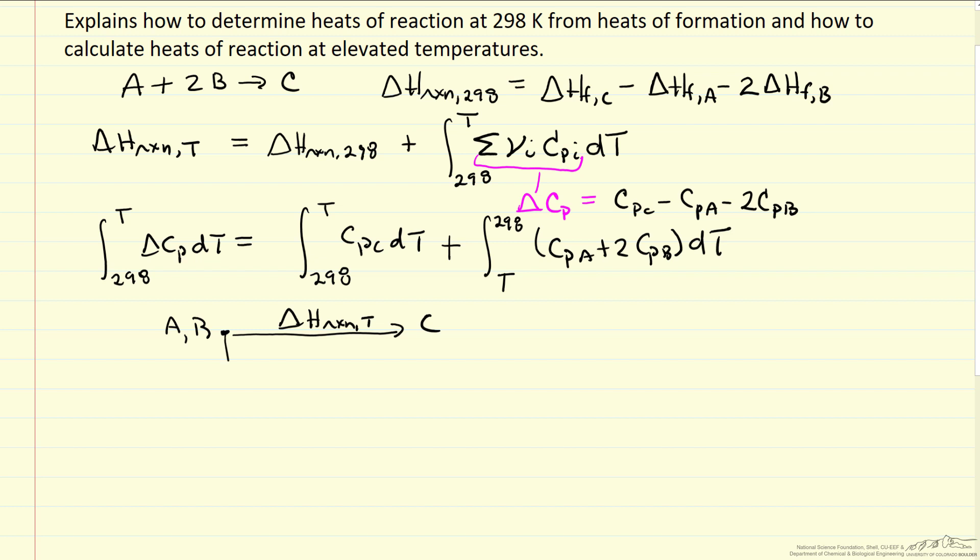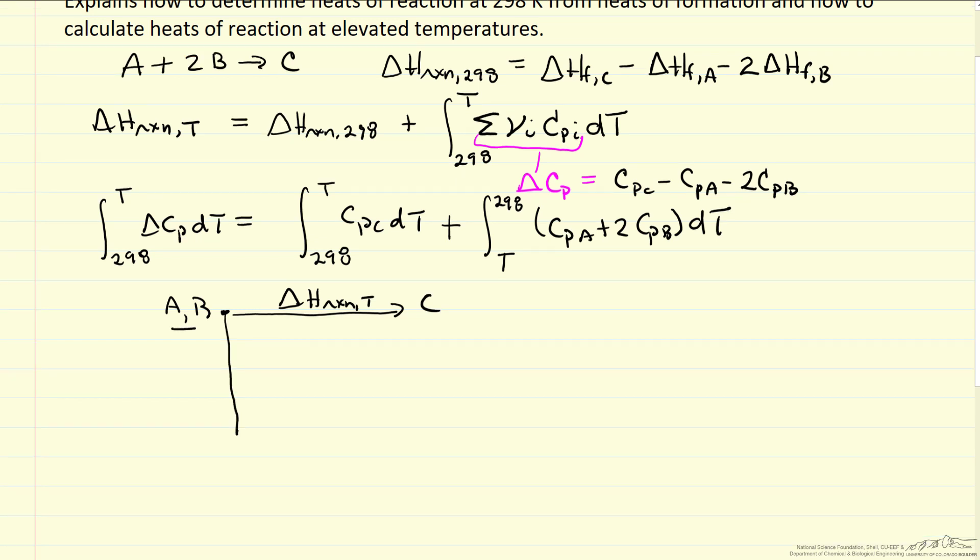The way we do the calculation is we cool, so we're at temperature T here, we cool down A and B to 298 Kelvin, carry out the reaction at 298 because we have data for heat formation. And so now we have the product at 298, and then we raise the temperature up for product C up to that final temperature.